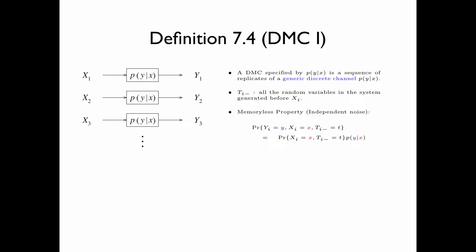The probability that YI, the output of the channel at time I, equals small y, and XI, the input to the channel at time I, equals small x, and TI minus equals some value T, is equal to the probability that XI equals x and TI minus equals T, times PY given X. The transition probability PY given X here corresponds to the probability that YI equals small y, given XI equals small x and TI minus equals T.